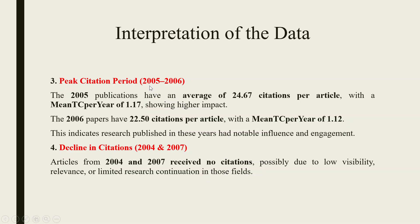Peak citation period (2005 to 2006): the 2005 publications have an average of 24.67 citations per article with mean TC per year of 1.17, showing higher impact. The 2006 papers have 22.5 citations per article with mean TC per year of 1.12, indicating notable influence and engagement. Decline in citations seen in 2004 and 2007: articles from 2004 and 2007 received no citations, possibly due to low visibility, relevance, or limited research continuation in those fields.